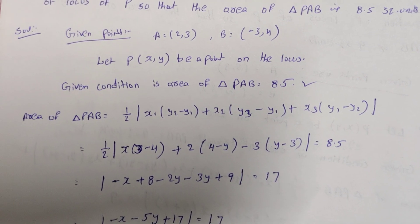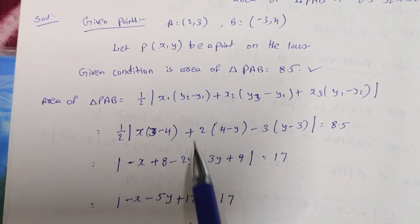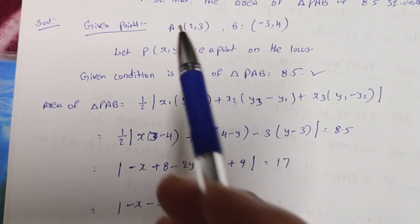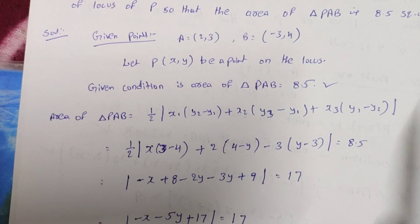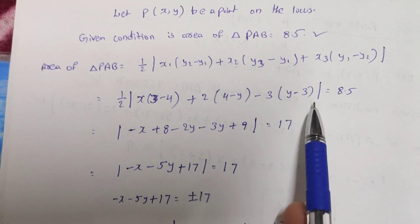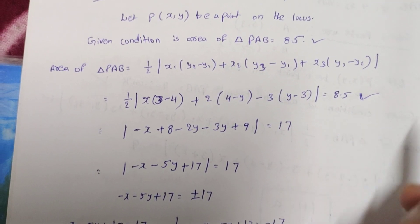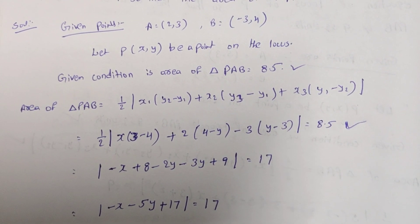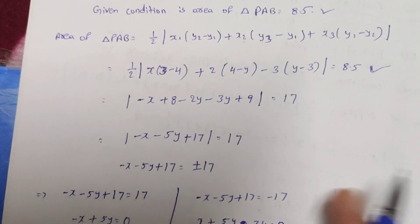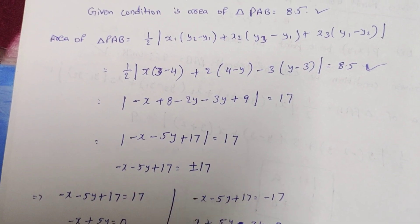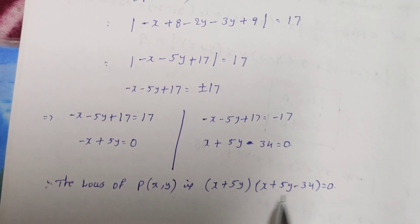Apply the same area of triangle formula: one-half mod of x1(y2 minus y3) plus x2(y3 minus y1) plus x3(y1 minus y2). Substitute the coordinates into the formula. Since the area is 8.5, multiply by 2 to get 17. Simplifying gives plus or minus 17, resulting in two final equations.